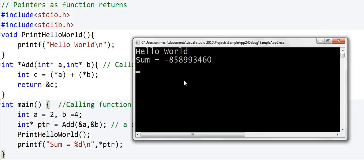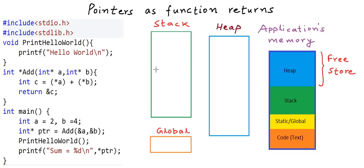Let's try to understand what really happened here. The memory allocated to a program is typically divided into sections. All local variables and information about function call executions go into the stack. For each function call, some part of the stack memory is allocated for its execution — we call this the stack frame of that function. When the program starts, the main method is invoked first, so memory is allocated in the stack for the main function, and all its local variables live inside this stack frame.